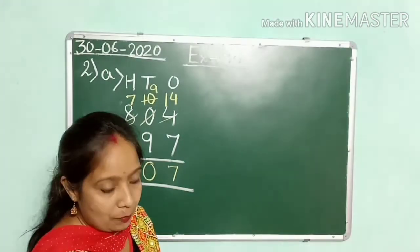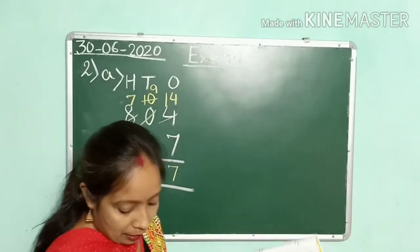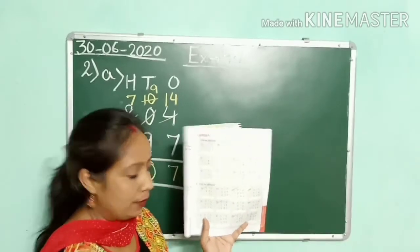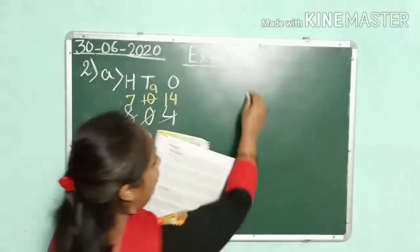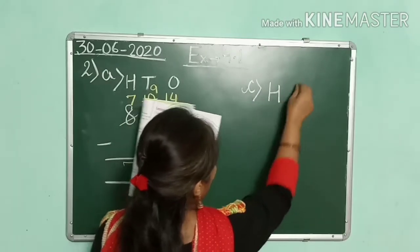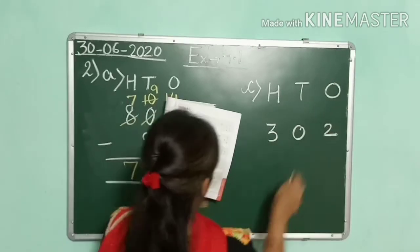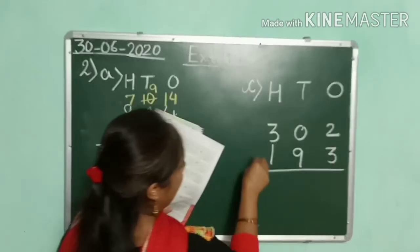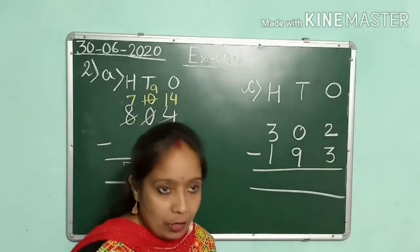I hope you are getting it, children. Let's solve more examples. Now we are going to solve question number C. Our question number C — I am writing here: 100s, 10s, 1s. The numbers are 302 and you have to subtract 193.